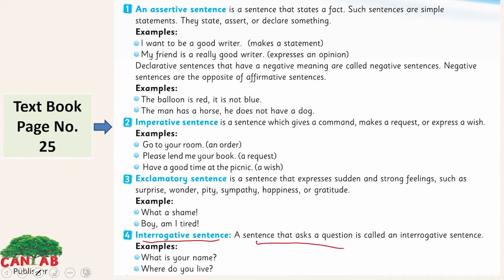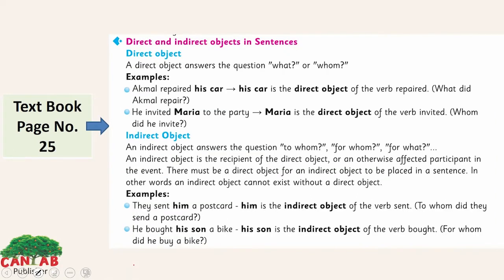Look at the fourth type: the interrogative sentence. A sentence that asks a question is called an interrogative sentence. As mentioned earlier, it always includes a question mark at the end because it is in interrogative form. When we ask a question from someone — 'What is your name?' or 'Where do you live?' — we are interrogating someone.